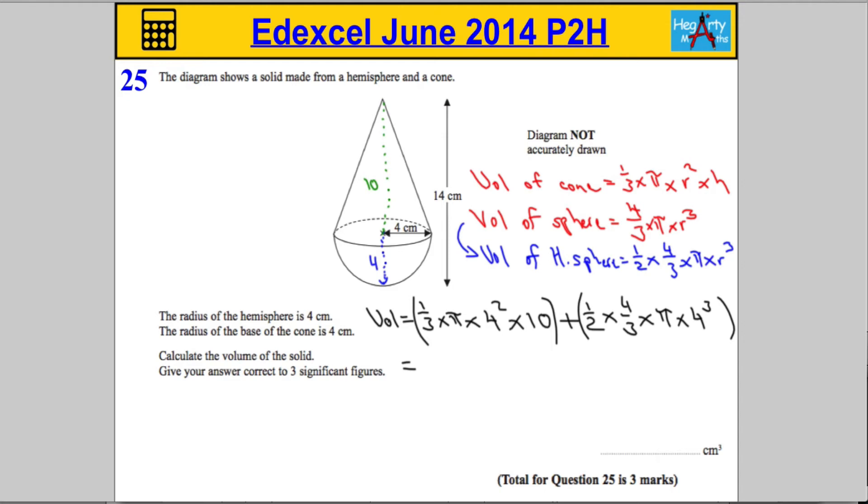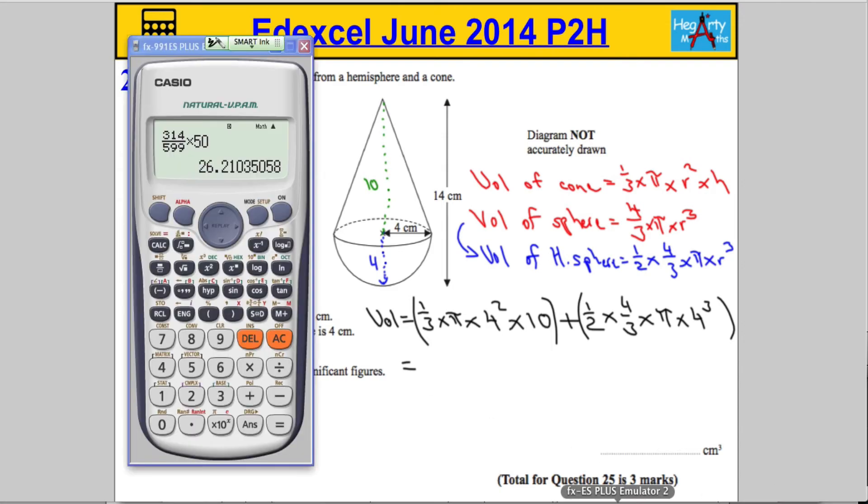And now I'm going to let the calculator do all the hard work. Let's get the calculator out and let's put it in as we see it. So I'm going to open brackets. We're going to do 1 over 3 times pi times 4 squared times 10. I'm going to close the bracket. Now, you could work that out if you want and write it down. I'm going to keep going.